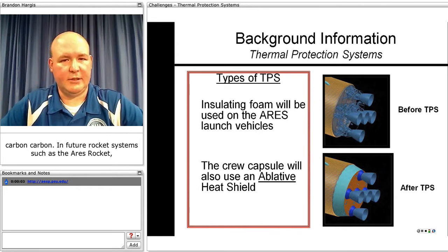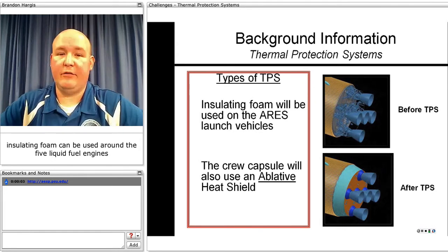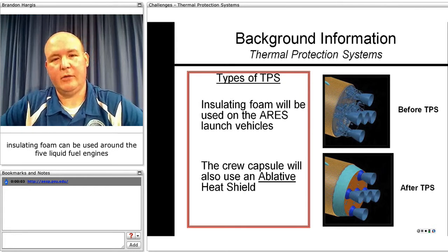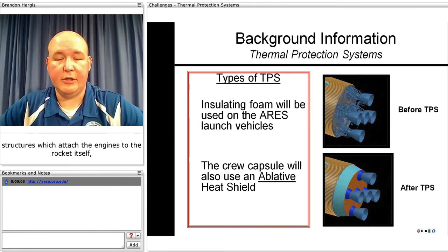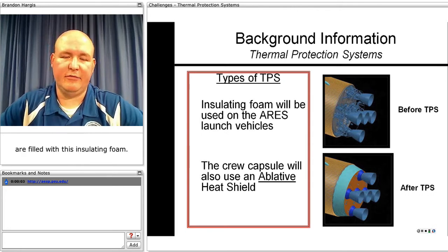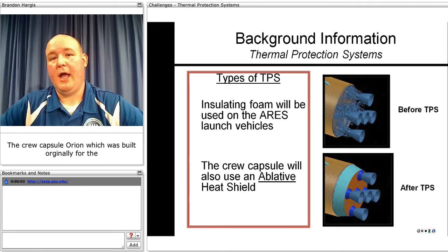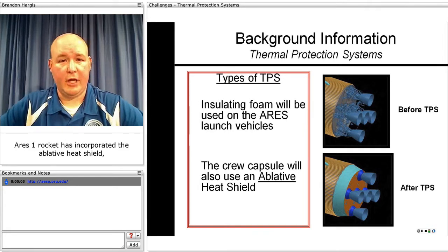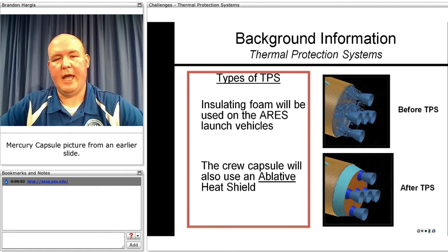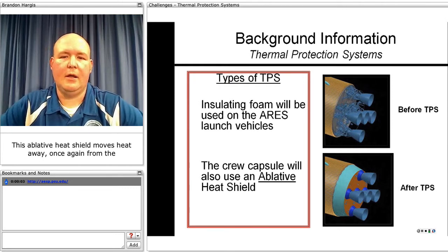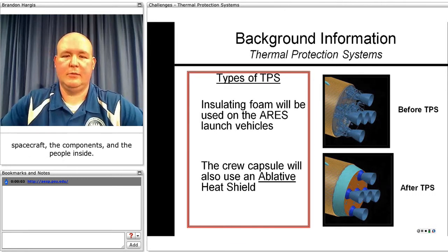In future rocket systems, such as the Ares rockets, insulating foam can be used around the five liquid fuel engines found at the base of that rocket. The thrust structures, which attach the engines to the rocket itself, are filled with this insulating foam. The crew capsule Orion, which was built originally for the Ares-1 rocket, has incorporated the ablative heat shield we saw in the Mercury capsule picture, which moves heat away from the spacecraft, the components, and the people inside.